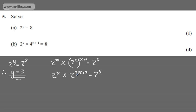I have the same bases, so when multiplying, I can add the powers. 2 to the power of 3x plus 2 equals 2 to the power of 3. Since I have the same bases, the powers must be the same, so 3x plus 2 equals 3.